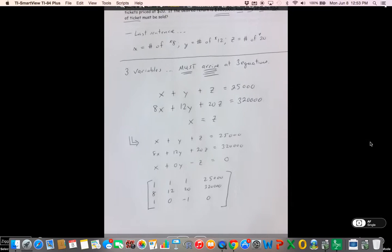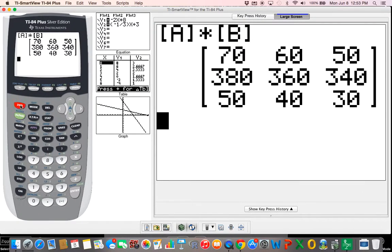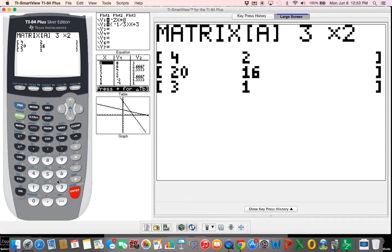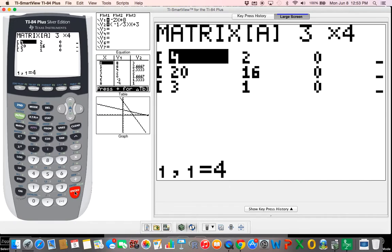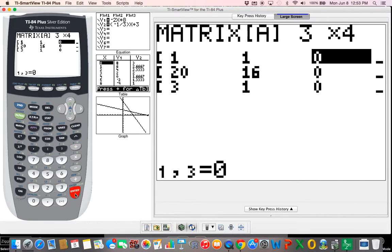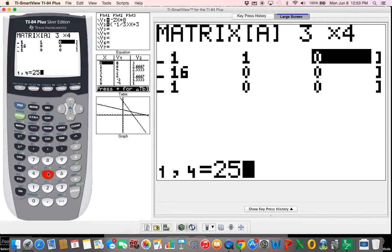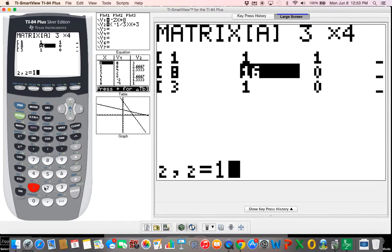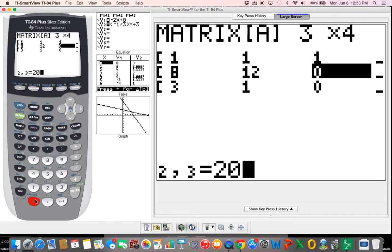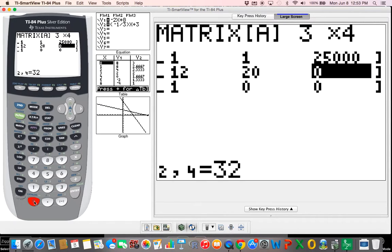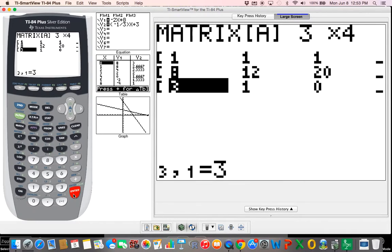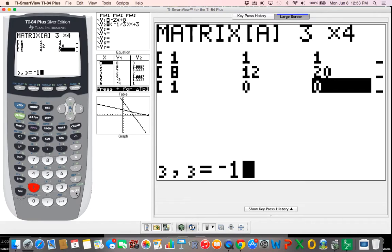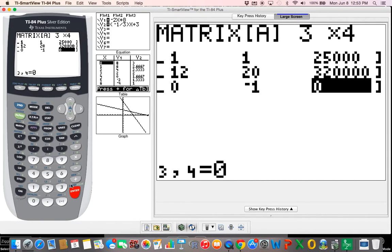Alright, so let's put this in our calculator just like before. So I'm just going to choose matrix A. We need a 3 by 4. So I have 1, 1, 1, 25,000. Just make sure you get your zeros right. I need 8, 12, 20, 320,000. And the one that usually throws people off, 1, 0, minus 1, and 0. Alright let's get out of this.